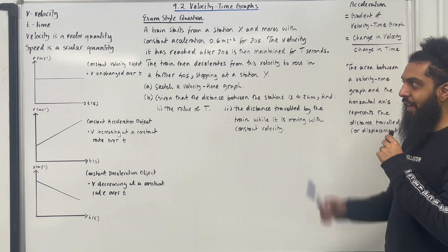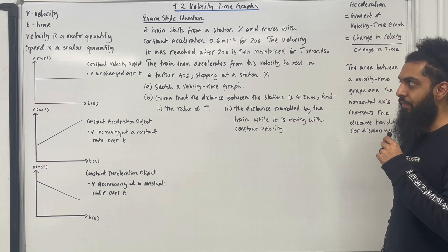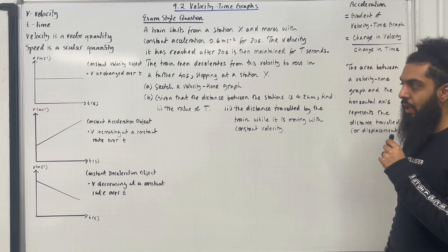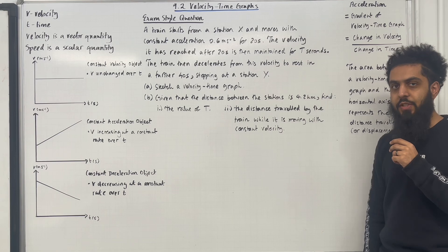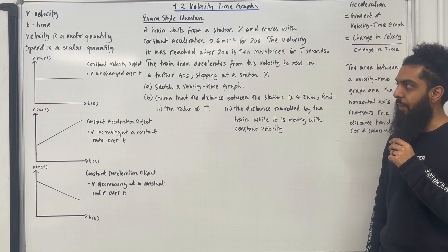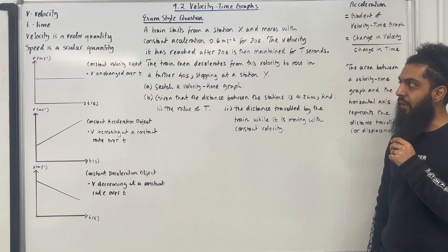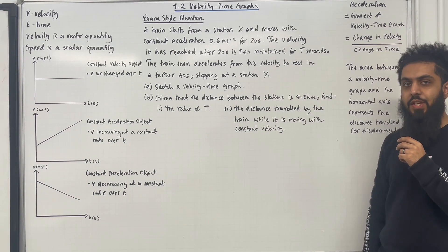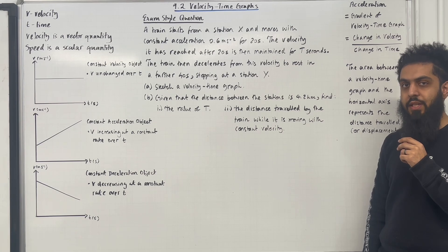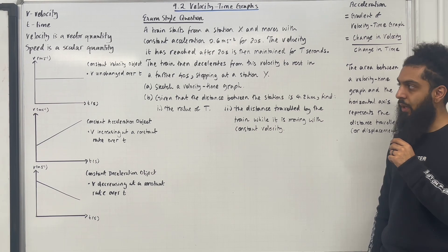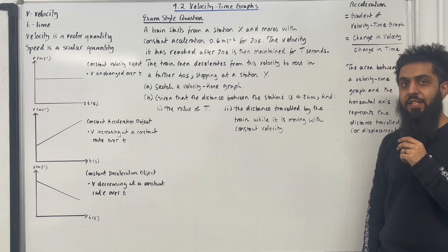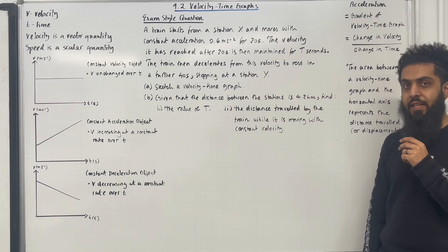Let's have a look at the key facts of this section, starting off with two important notations. V represents velocity, T represents time. Velocity is a vector quantity — this means that velocity consists of magnitude and direction. Speed is a scalar quantity — this means that speed consists of magnitude only; there is no direction.